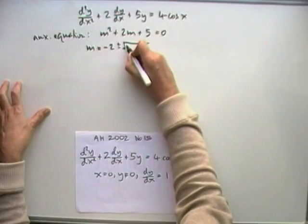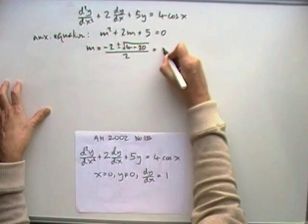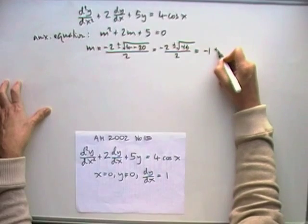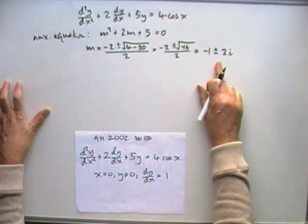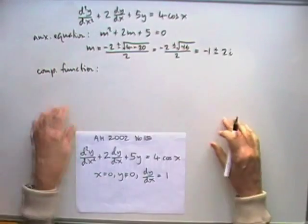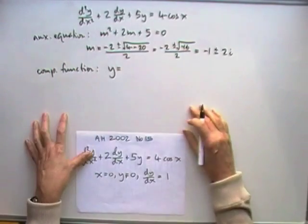so putting in the formula for that, 4 take away 20, that'll give me a complex conjugate pair, so there is negative 1 plus or minus 2i, which means that for the complementary function,